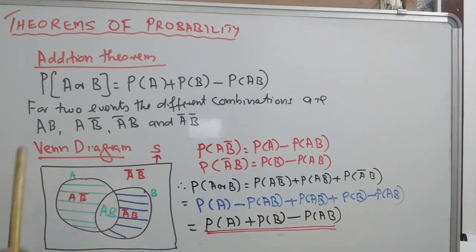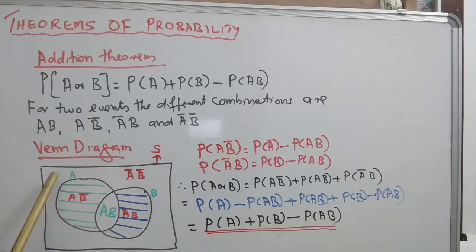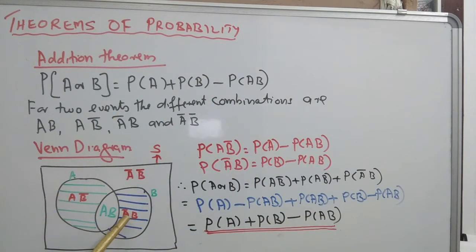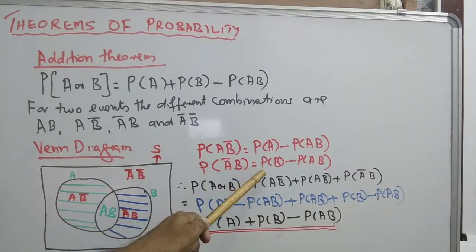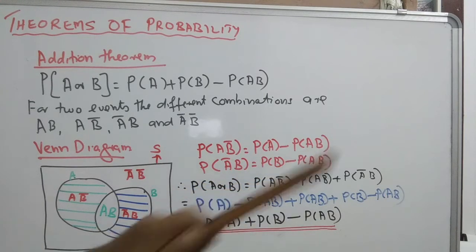Using the area property, AB-bar equals A minus AB. From circle A, we subtract the common area AB, so P of AB-bar equals P of A minus P of AB. Similarly, A-bar B equals B minus the common area AB, so probability of A-bar B equals P of B minus P of AB.